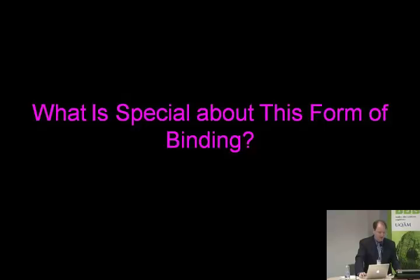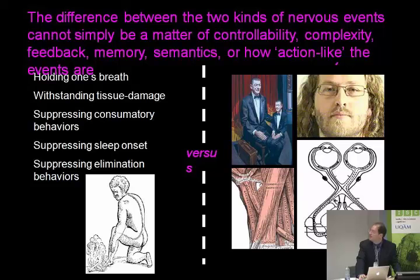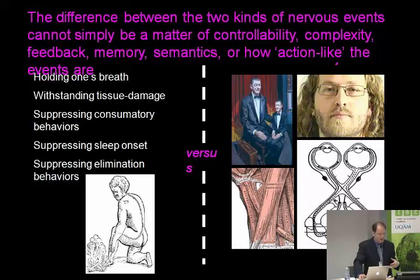It seems like integration at a high level involving systems that are agentic requires consciousness. What's special about this form of binding? So now we have this continued contrast approach — this is a descriptive, naturalistic approach. Here we have the integrations that involve consciousness.